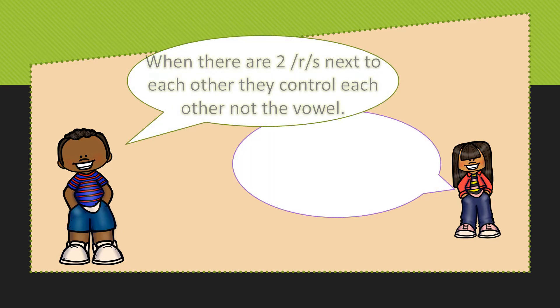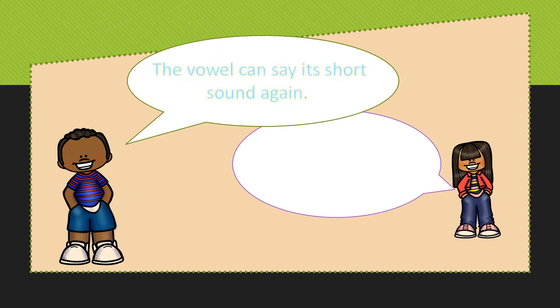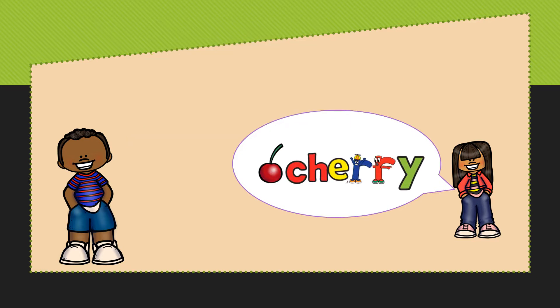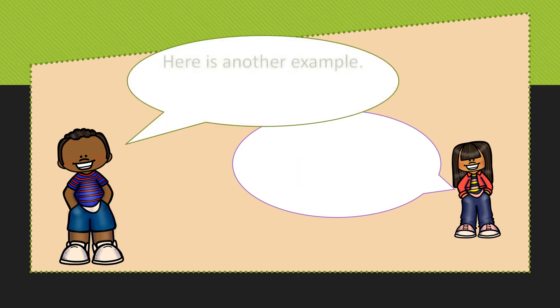When there are two Rs next to each other, they control each other and not the vowel. So the vowel can say its short sound again. So look at this example. This is the word cherry. The two Rs are controlling each other.